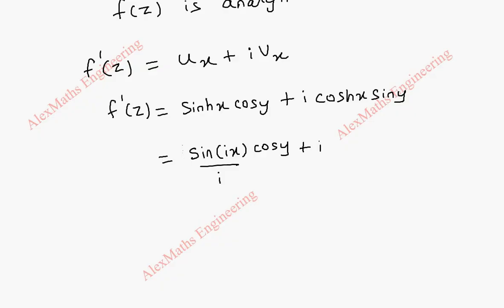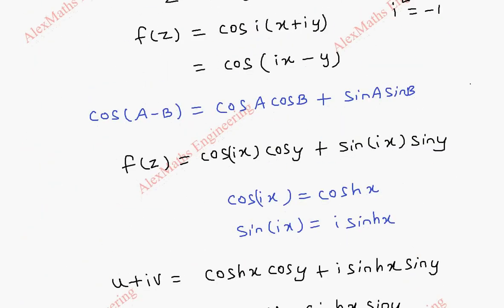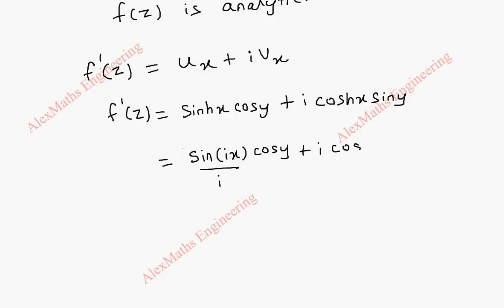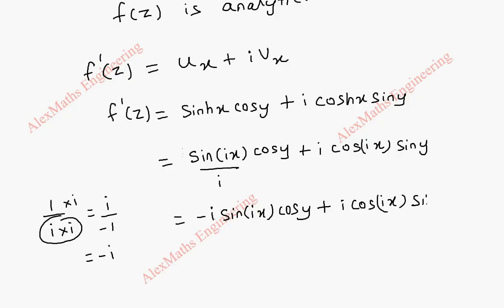And here, i into cosh x. It will be cos ix. So, cos ix into sin y. But here, when we have 1 by i, we can multiply into i with both numerator and denominator. This becomes i squared minus 1. So, i by minus 1 becomes minus i. So, this becomes minus i sin of ix into cos y plus i cos of ix into sin y.